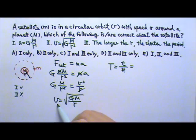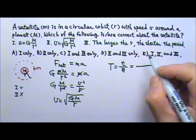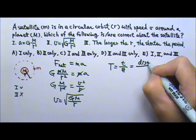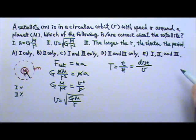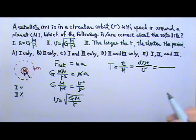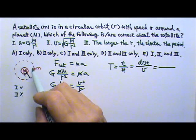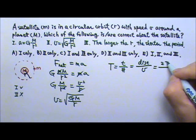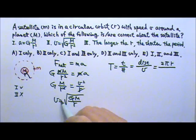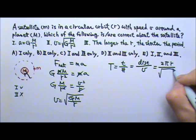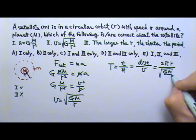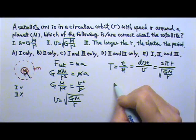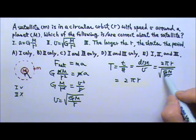Since we already know the speed, we can find the period by looking at the distance traveled divided by the speed. In one circle, the distance traveled will be one circumference. So the distance traveled is 2πr. And we have the speed right here, square root of GM divided by r. So to simplify this,